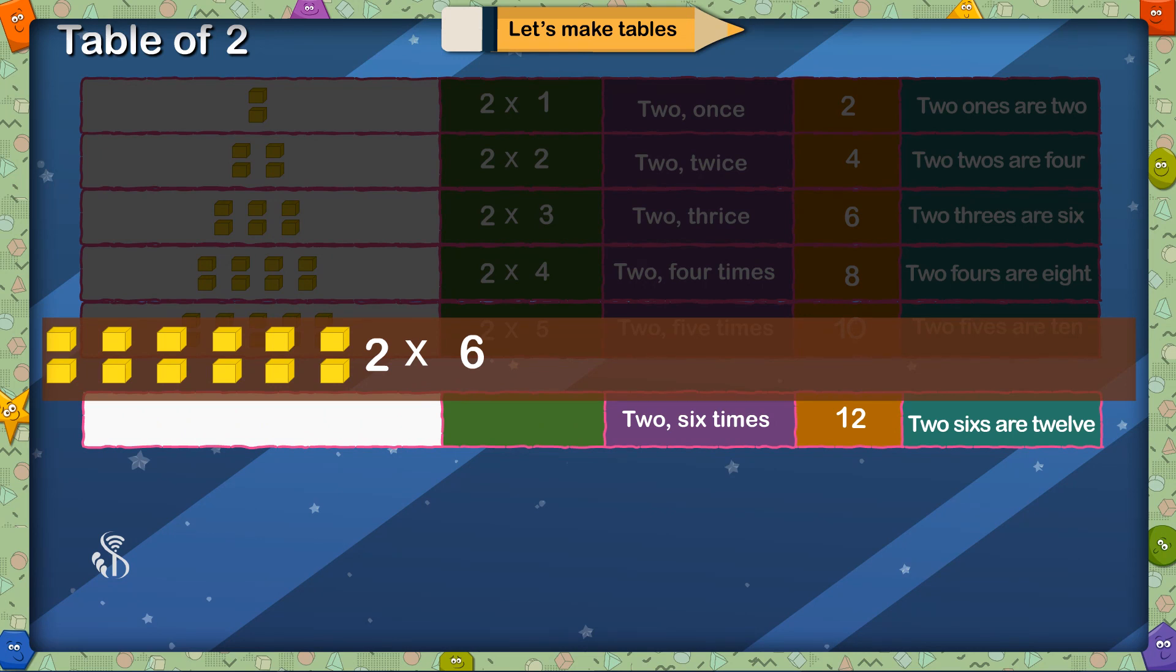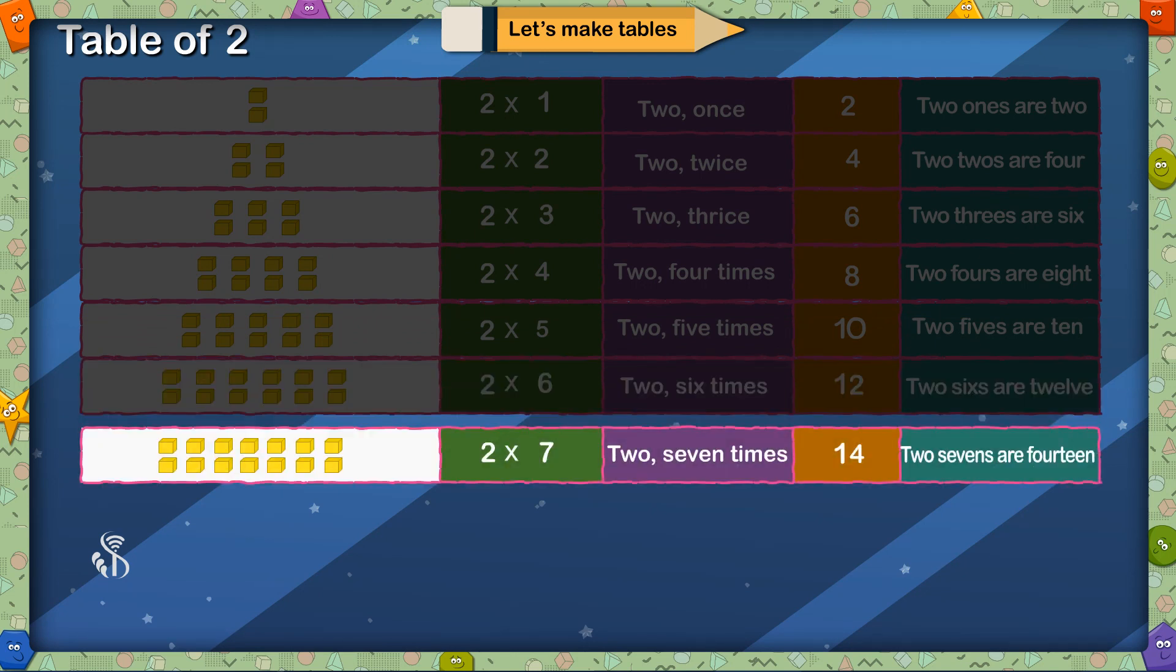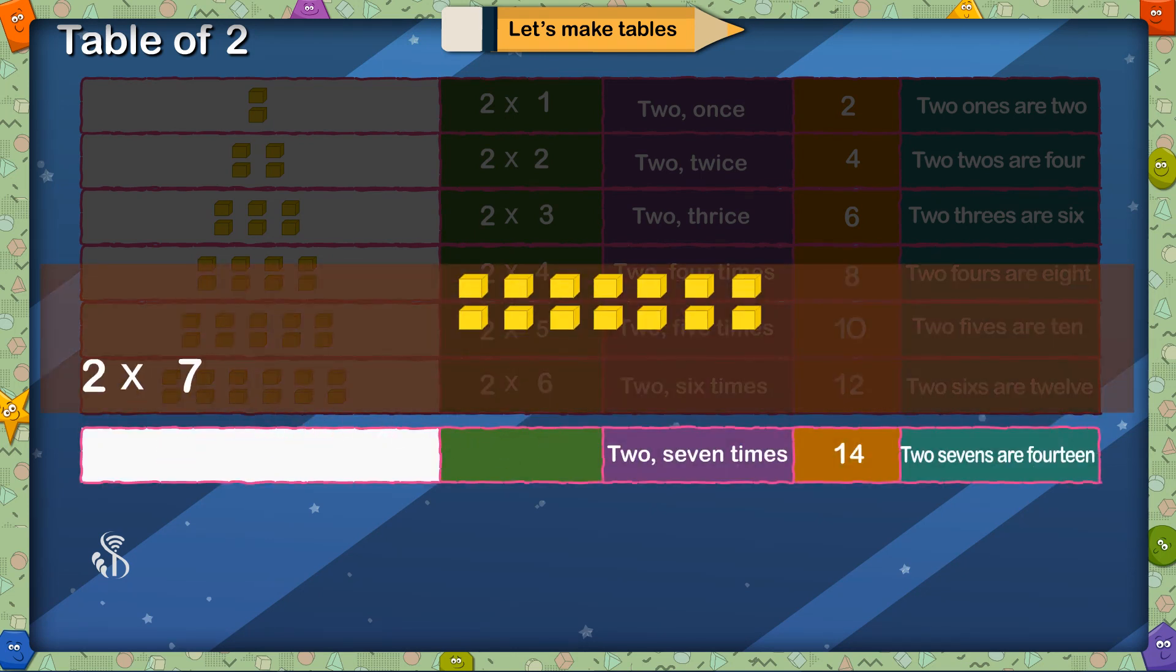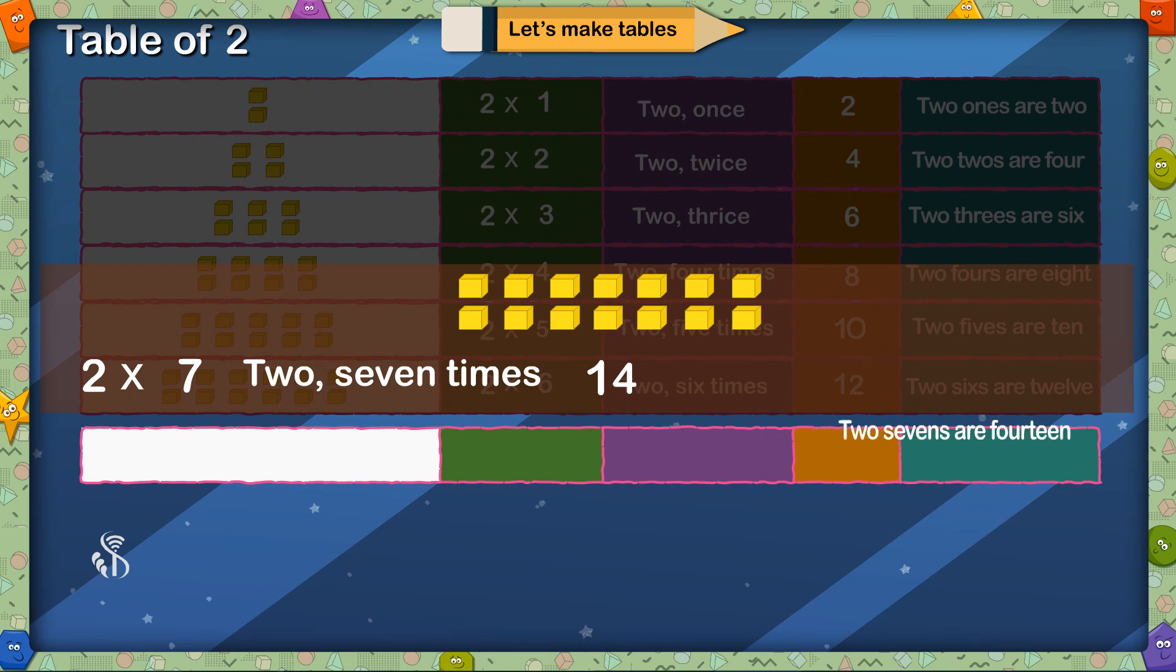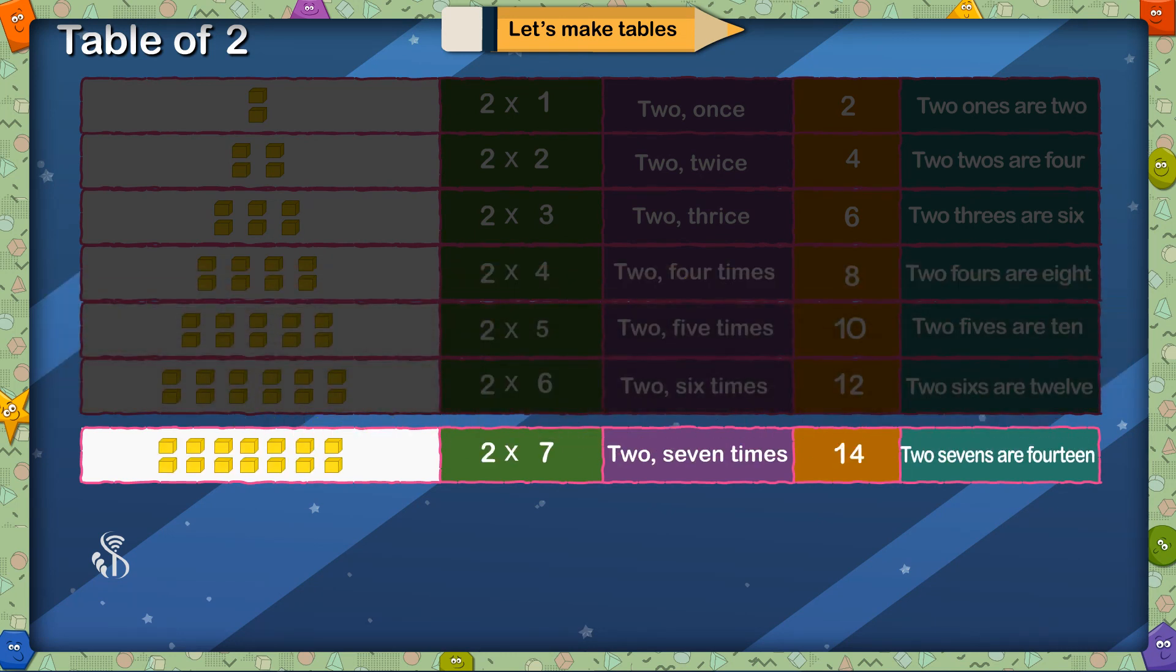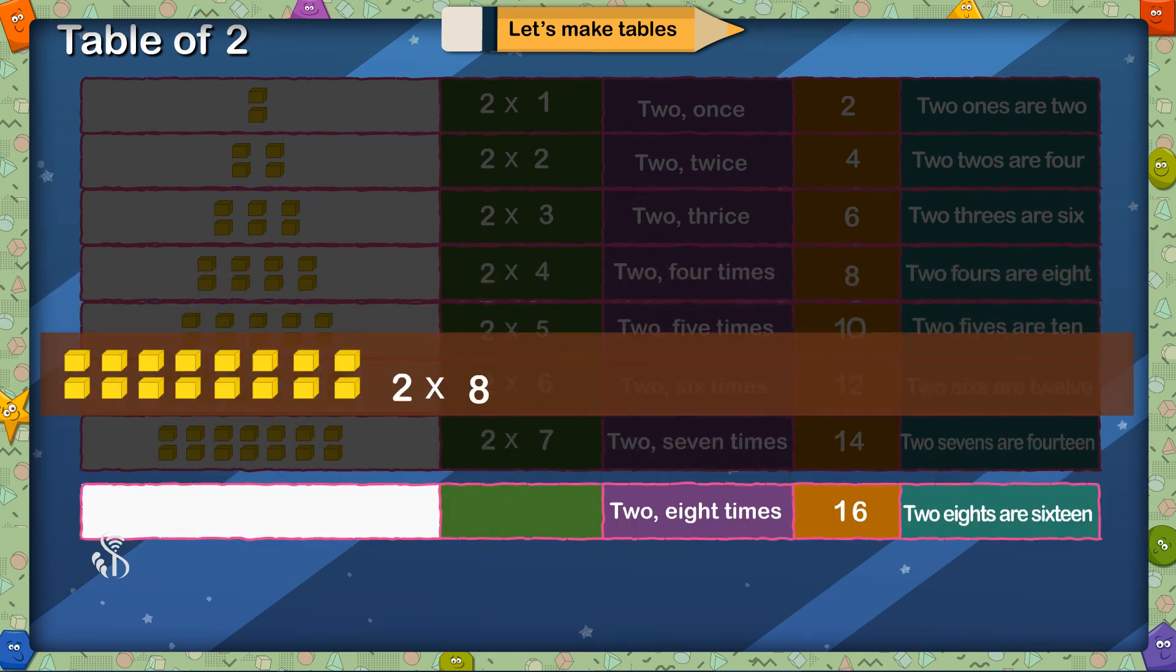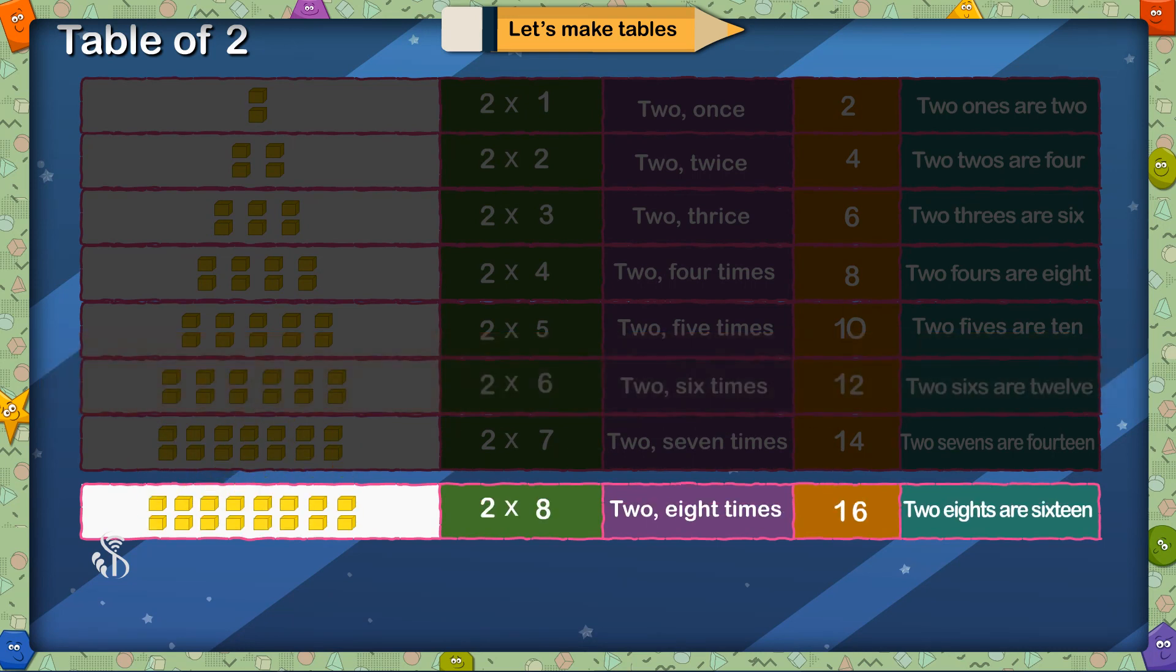2 multiplied by 6, 2 6 times is 12, 2 6s are 12. 2 multiplied by 7, 2 7 times is 14, 2 7s are 14. 2 multiplied by 8, 2 8 times is 16, 2 8s are 16.